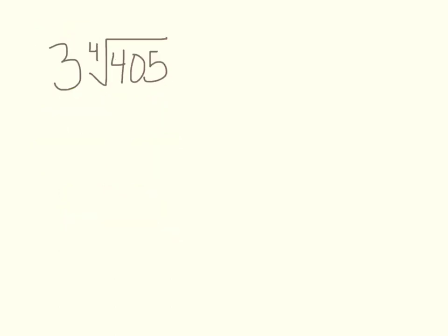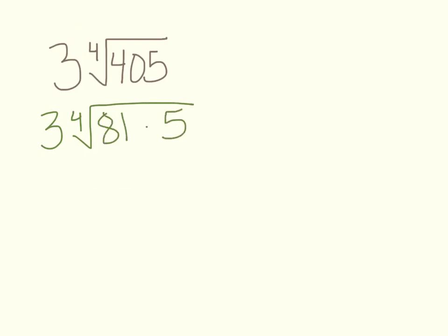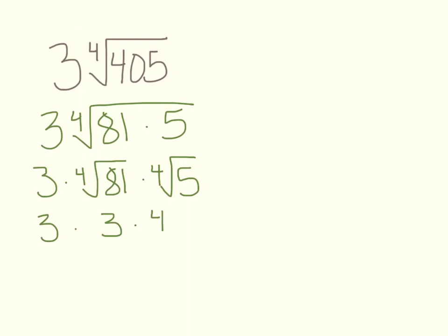Next: 3 times the fourth root of 405. Since 405 is not a perfect fourth power, find what perfect fourth power goes into it — that's 81, since 81 times 5 equals 405. So it's 3 times the fourth root of 81 times the fourth root of 5. The fourth root of 81 is 3, giving 3 times 3 times the fourth root of 5, which equals 9 fourth roots of 5.